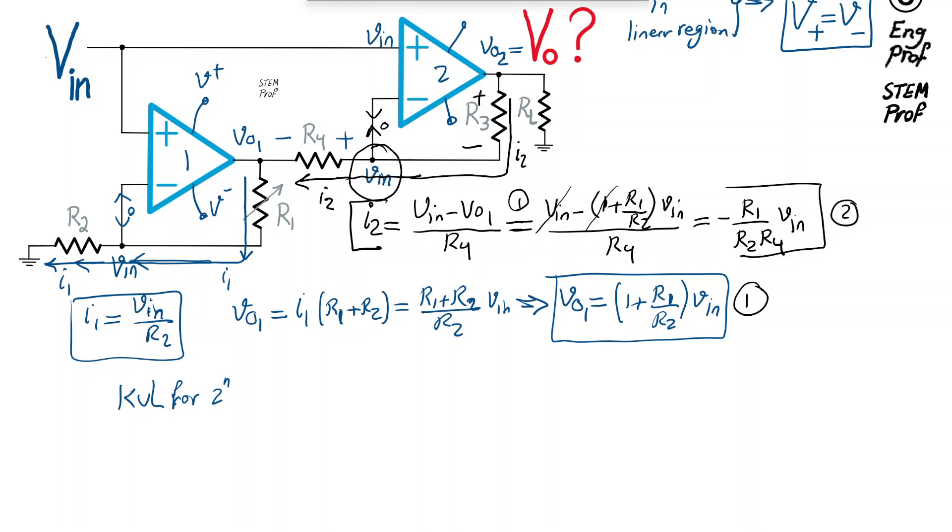That would be saying the Vout 2, Vout is the same as Vout 2, is equal to the sum of V-in, so the voltage at this node, and then the voltage drop across R3, so plus VR3.